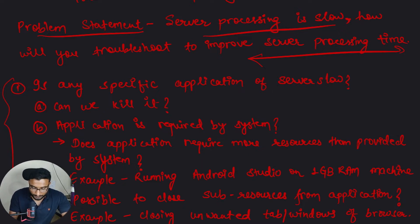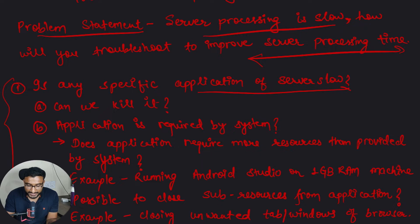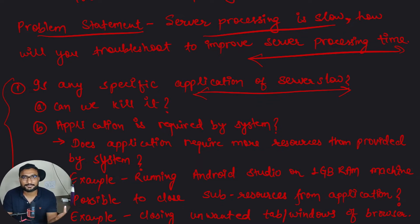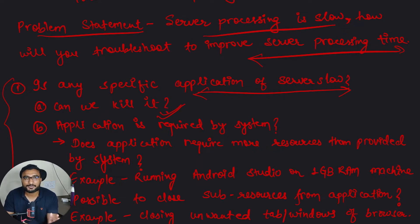First, look at the system and check if any specific application is making the server slow. Sometimes you get a notification that an application is consuming a lot of resources — for example, running Android Studio on a 1GB RAM machine will cause the system to hang. If that application is not required, you can kill it.